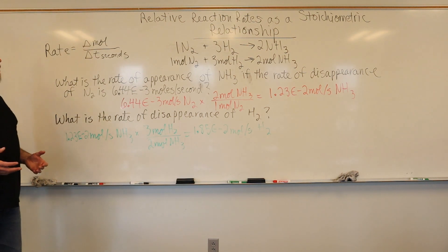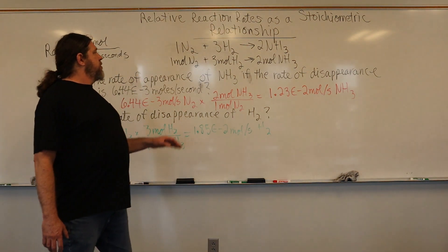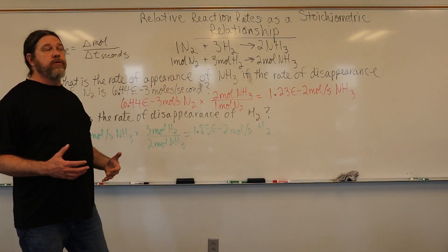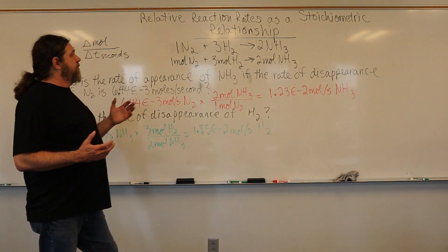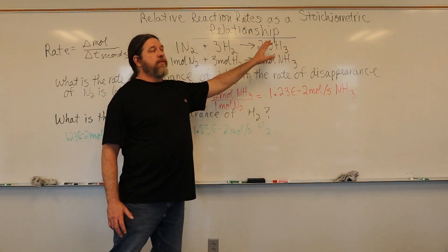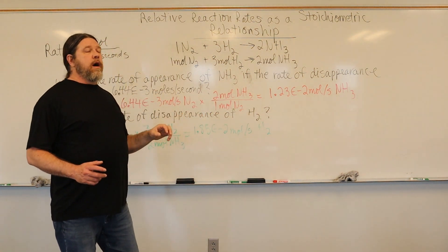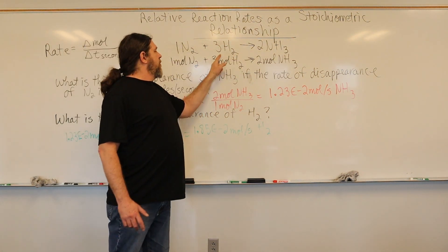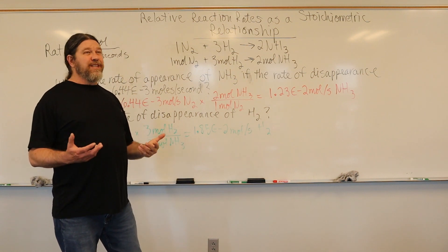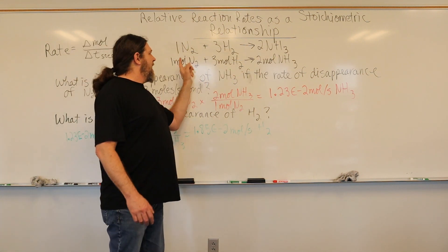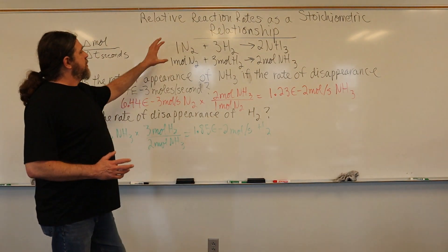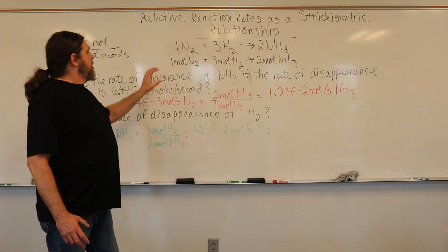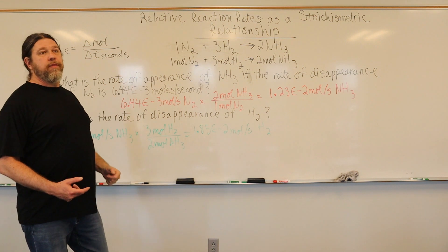It makes sense that on a molar level, we're losing hydrogen at three times the rate that we are losing nitrogen. That would mean also that ammonia is appearing at two-thirds the rate of hydrogen's disappearance, or two times the rate of nitrogen's disappearance. It doesn't matter whether we're looking at it from the vantage point of a reactant or a product - molar relationships are what they are.